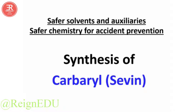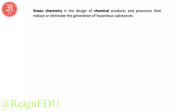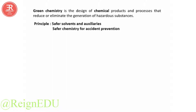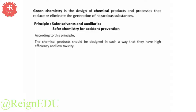Today we are learning the synthesis of carbaryl, also called Sevin, under the green chemistry principles of safer solvents and auxiliaries and safer chemistry for accident prevention. Green chemistry is the design of chemical products and processes that reduce or eliminate the generation of hazardous substances. According to these principles, chemical products should be designed to have high efficiency and low toxicity.